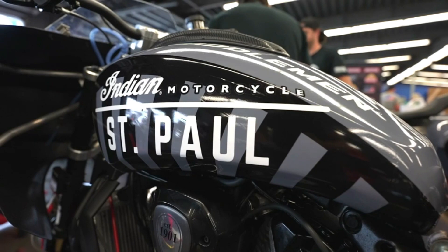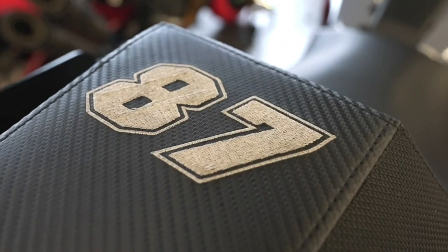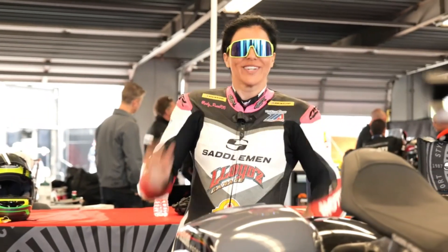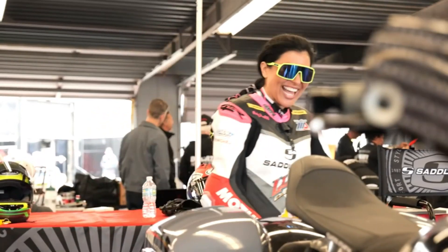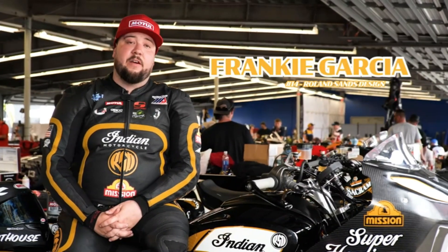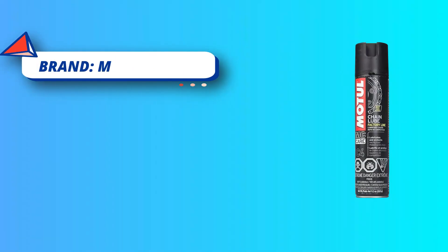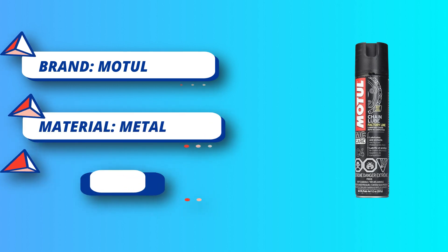Formulated for maximum friction reduction, reduced chain wear, and increased power conversion. Motil C2 Chain Lube, Road, adheres to all chains even at high speeds. For best results, allow C2 to dry prior to your next ride or drive.